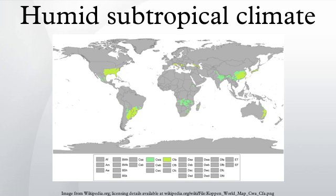A humid subtropical climate is a zone of subtropical climate characterized by hot, humid summers and generally mild winters. Under the Köppen climate definition, this category of climate type covers a broad range of attributes, especially in terms of winter temperatures. Under the more modern Trewartha climate classification, most climates that have eight or more months with a mean temperature of 10°C are warm to hot much of the year with mild winters.